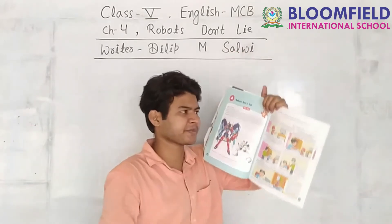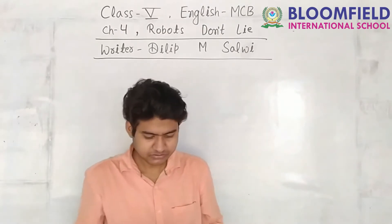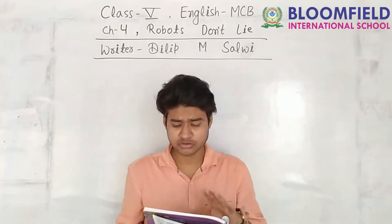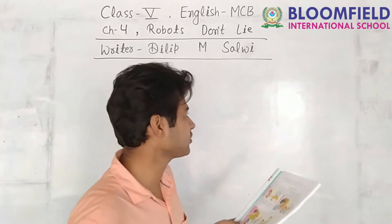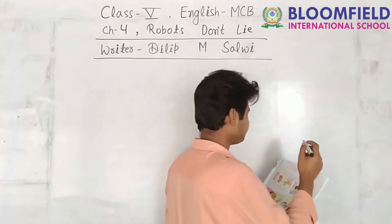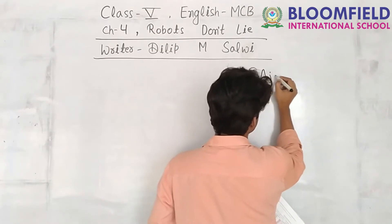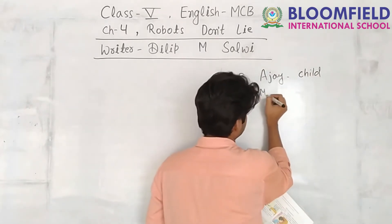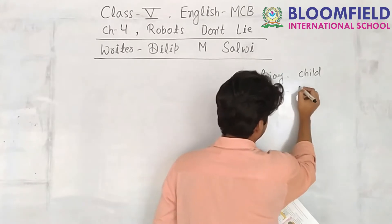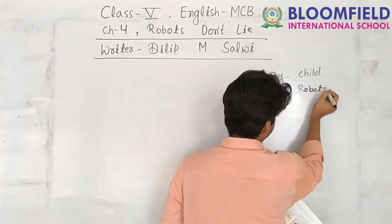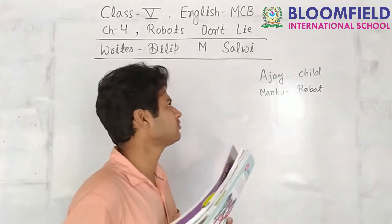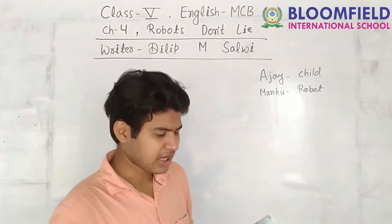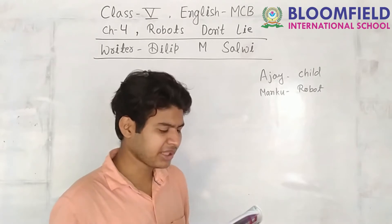The story asks: what relationship does Ajay share with his Manku robot? Read this interesting story to find out. There are two important characters: the first is Ajay, who is a child, and the other is Manku, who is a robot. The whole story revolves around these two characters. Ajay has a robot in the house but he is facing some problems.